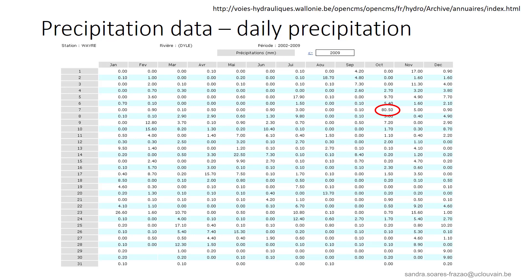Daily precipitation data are often publicly available, for example from the public authority of Wallonia. For each day, the total amount of rain is indicated. For example, on October 7, 2009, this day was a very wet day compared to others, with about 80 mm, while the other values are much lower.